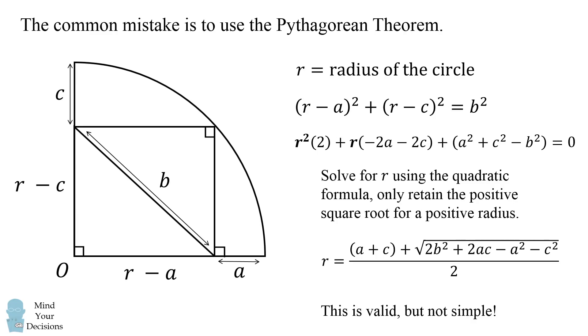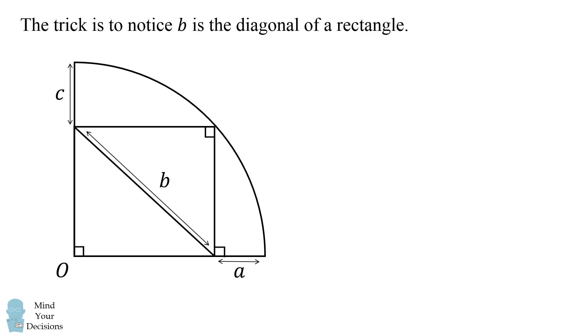So how can we figure it out? The trick is to notice b is the diagonal of a rectangle. If we again let r equal the radius of the circle, the trick is to consider what is the length of the other diagonal of this rectangle.